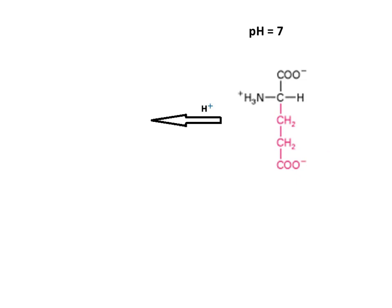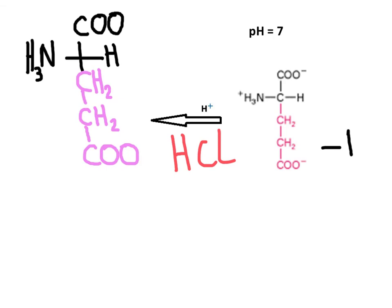This is glutamic acid, or glutamate, at pH 7. The net charge for this amino acid is negative one at physiological pH. If a strong solution of hydrochloric acid is added to a solution of glutamic acid, a change in net charge will take place. When HCl is added and pH reaches a low value, say between pH 1 and 2, both carboxylic acid groups will obtain a proton, and the net charge of this amino acid will change from negative one to plus one.